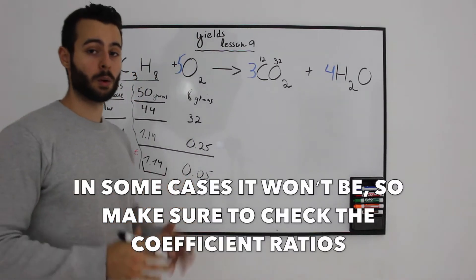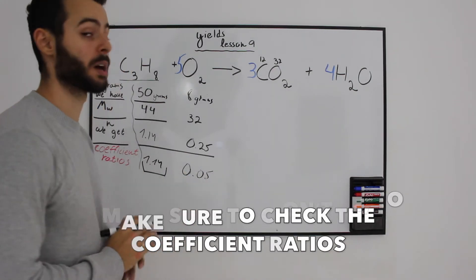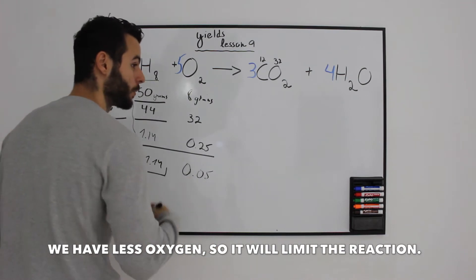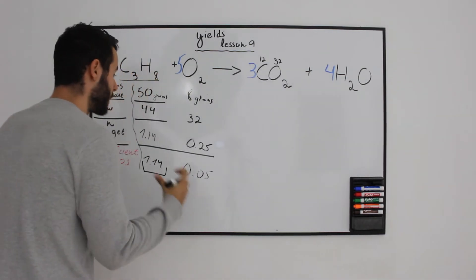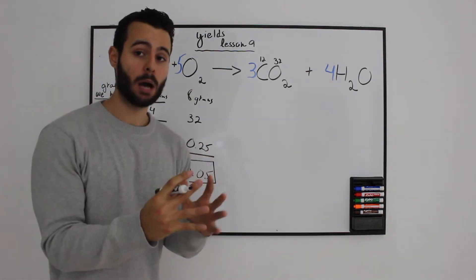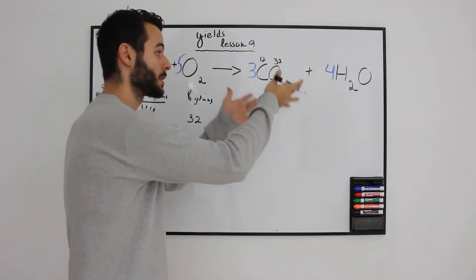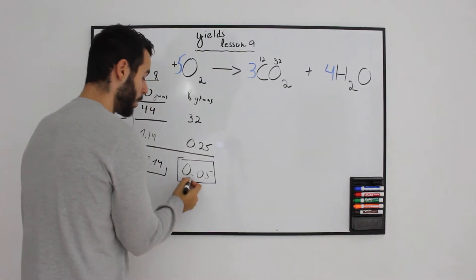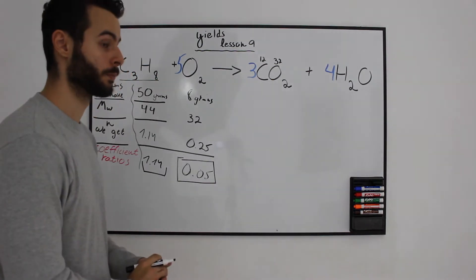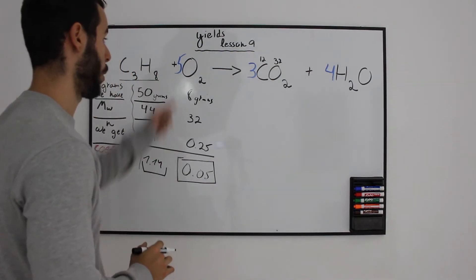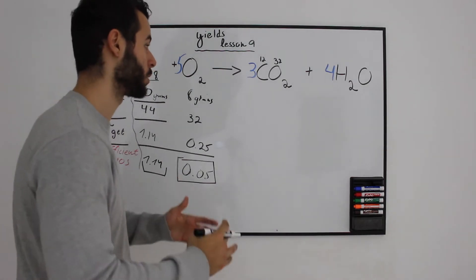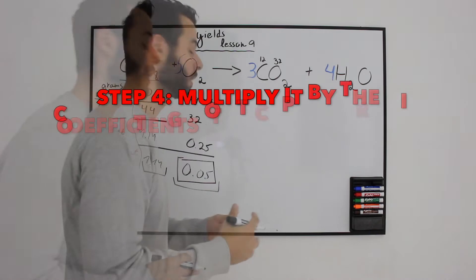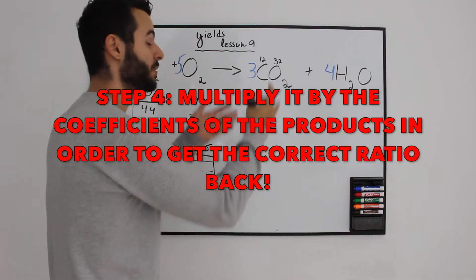What does it mean that we have 0.05 of oxygen? It means that only 0.05 moles of oxygen will be able to react with propane. Now let's see how we can get the amount of products because of the limiting reactant. If we have 0.05 moles as the coefficient ratio of oxygen, in order to get the actual moles of carbon dioxide and water, you have to multiply it by the coefficient of the products.